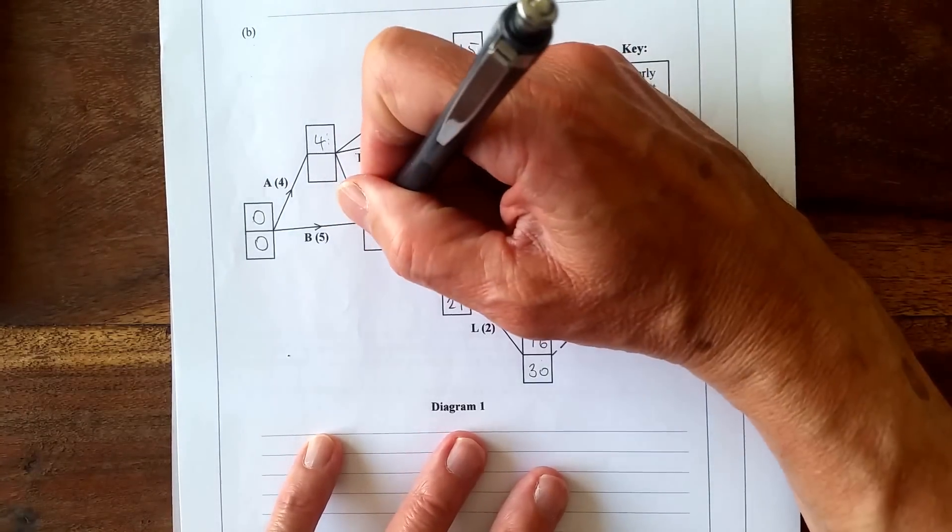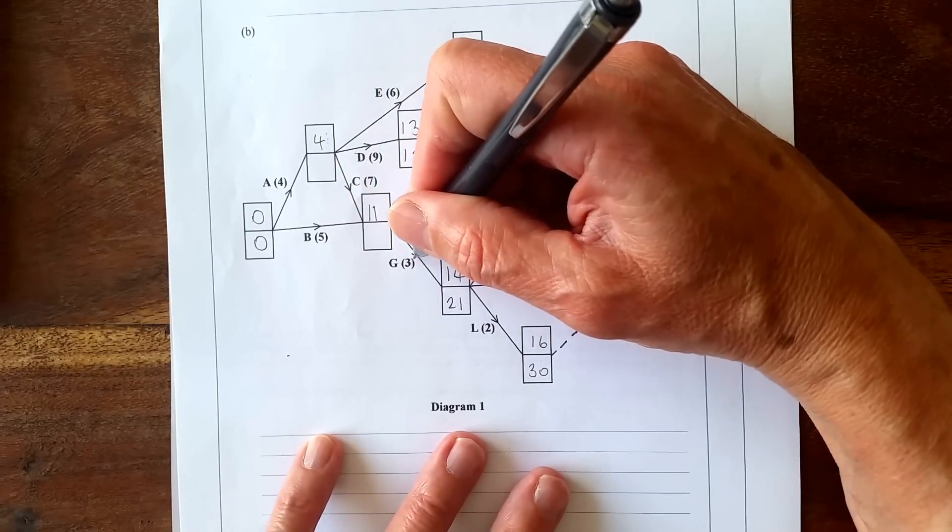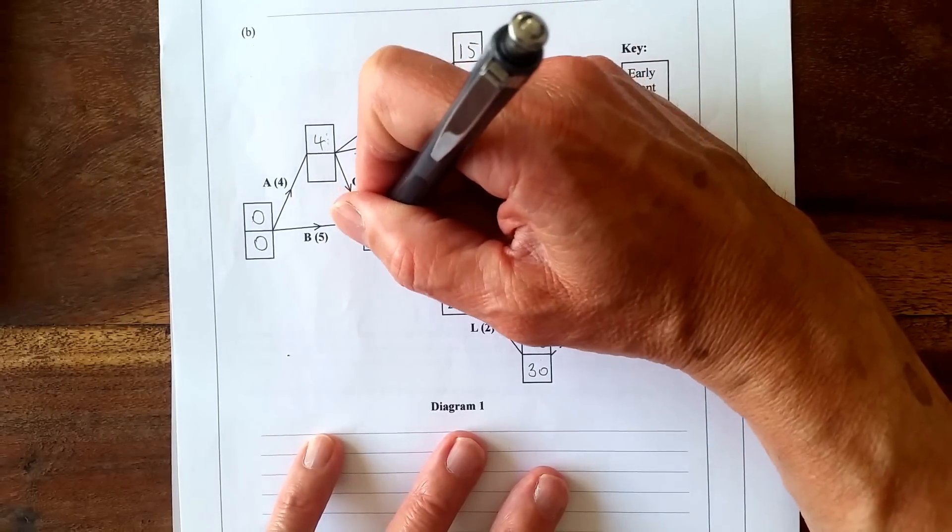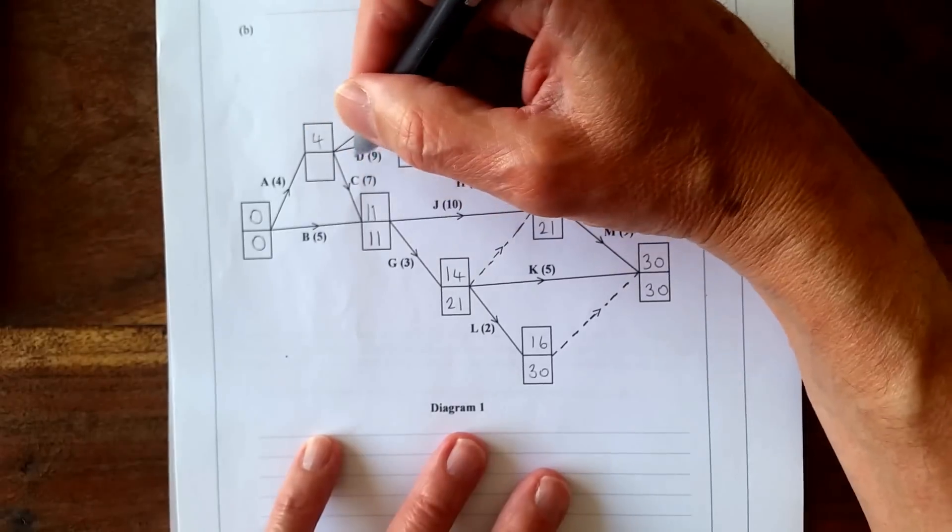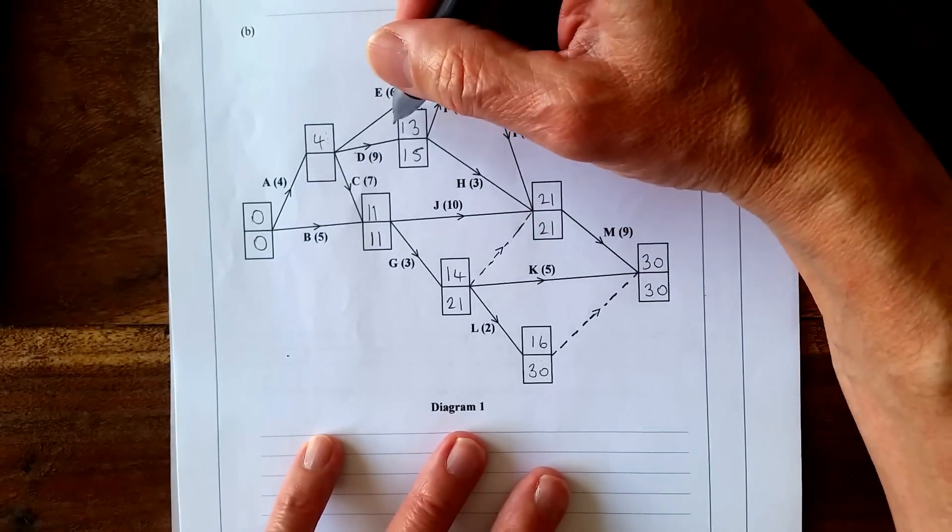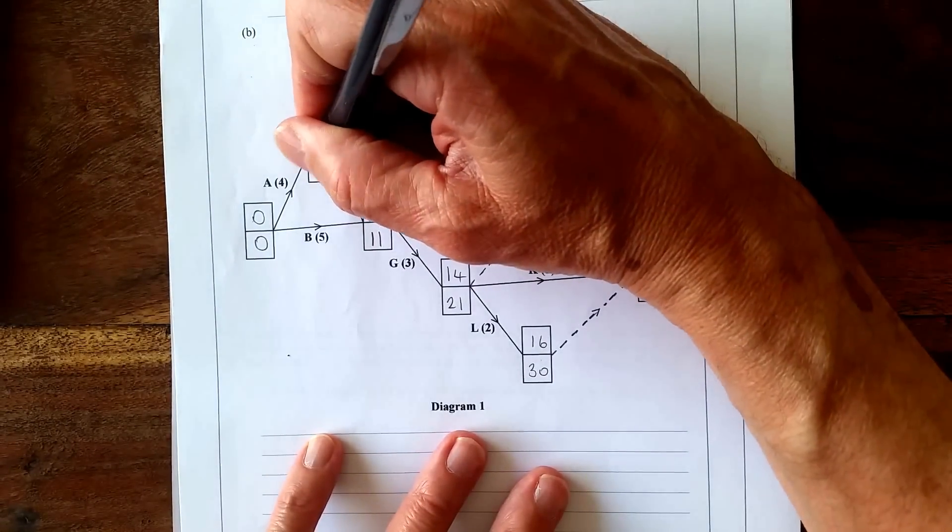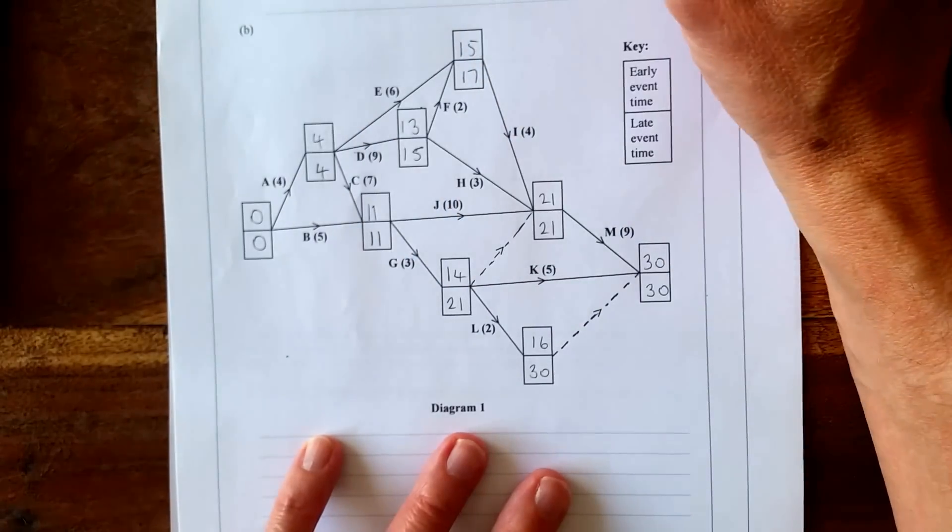21 take away 10 is 11, and 21 take away 3 is 18, so 11 is smaller. Let's try this one: 11 take away 7 is smaller than these two, so we've got 4 here. 4 take away 4 is 0.